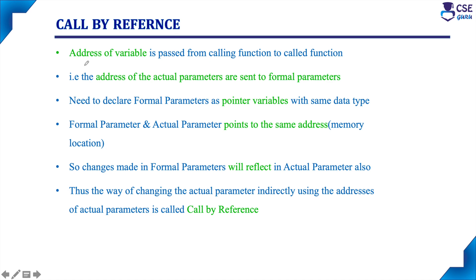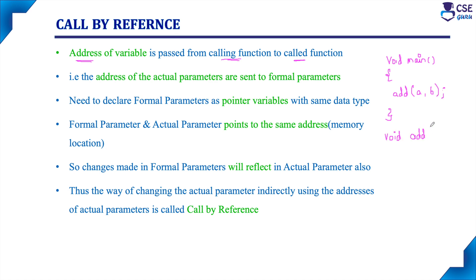In called by reference, the address of a variable is passed from the calling function to the called function. For example, if you are considering the main function, in main function only we will implement a function call — a calling function will be placed in main function. So here, address of variable is passed from calling function to called function. These concepts already we know.